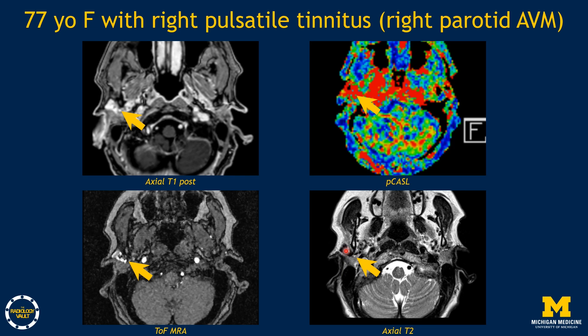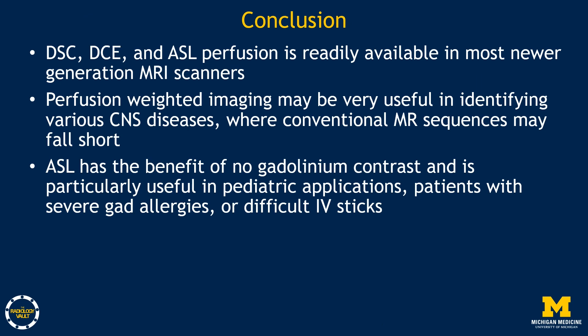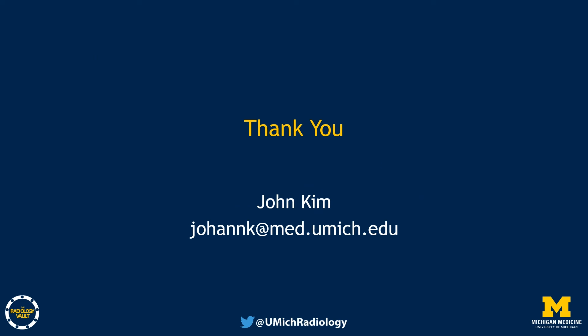In conclusion, DSC, DCE, and ASL perfusion is readily available in most newer generation MRI scanners. Perfusion-weighted imaging may be very helpful in identifying various CNS diseases where conventional MRI sequences may fall short. ASL also has the benefit of not using gadolinium contrast and is particularly useful in pediatric applications, as well as in patients with severe gadolinium allergies or difficult IV access. Thank you for your attention. Please email me if you have any questions.